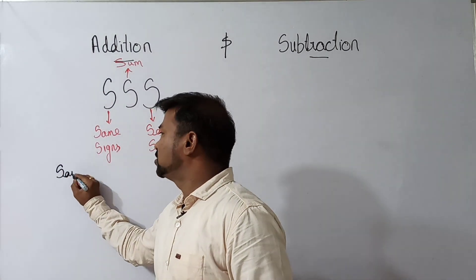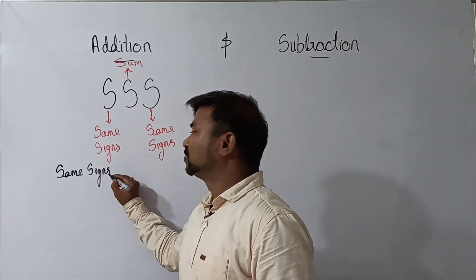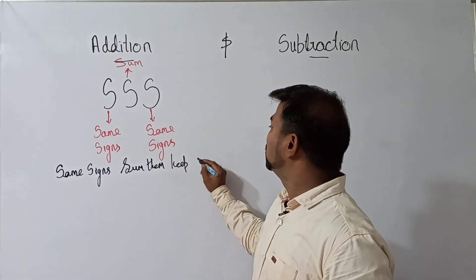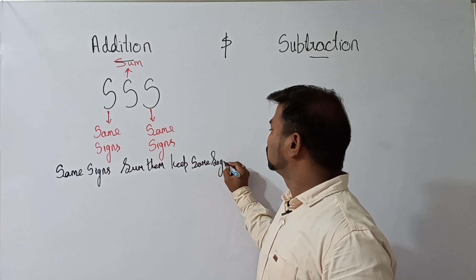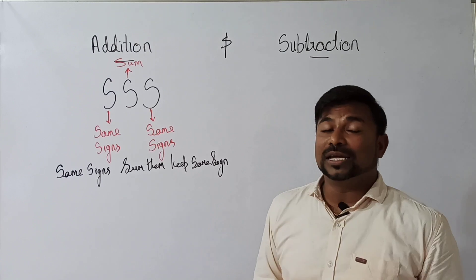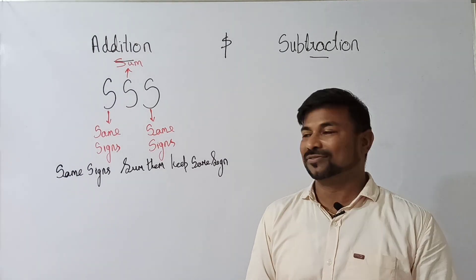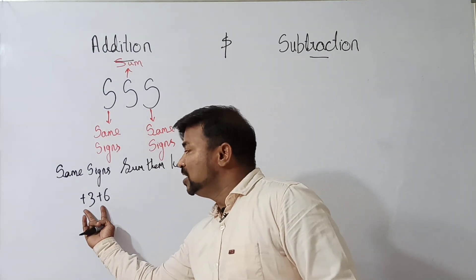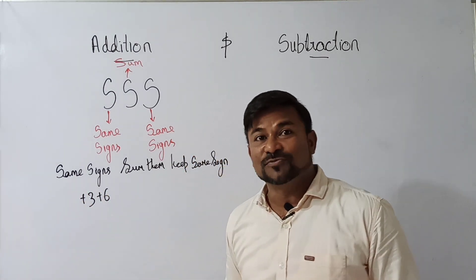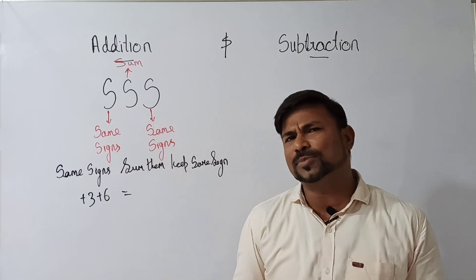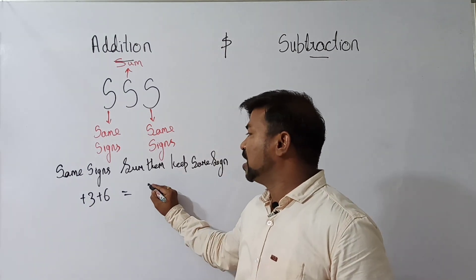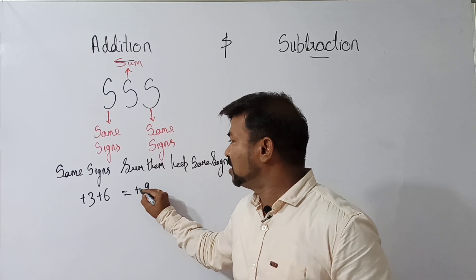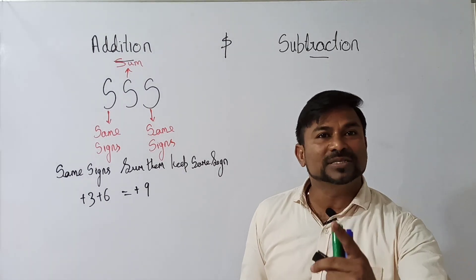I will write it down for you. Same signs — sum them — keep the same sign. Here we are dealing with numbers with different signs. Suppose let us take plus 3 and plus 6 as the first sum. Here we are having two same signs: plus and plus. We are adding them. Are they same signs? Yes. Sum them — meaning adding them. 6 plus 3 is 9. And the third S says keep the same sign. What is the sign we are having? Plus. Keep the same sign.